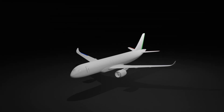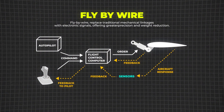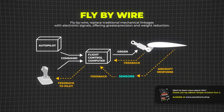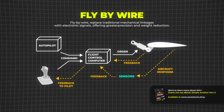Modern aircraft bring additional advancements. Fly-by-wire systems, for example, replace traditional mechanical linkages with electronic signals, offering greater precision and weight reduction. Autopilot systems automate control, maintaining heading, altitude, and speed, especially during cruise. Additionally, some aircraft, like Airbus models, use side sticks instead of traditional yokes, simplifying input while adhering to the same control principles.